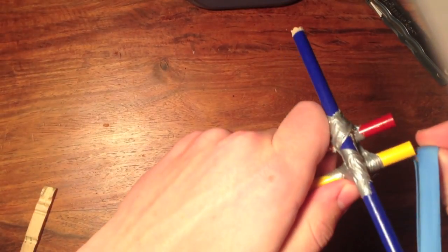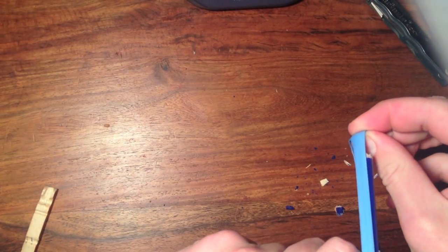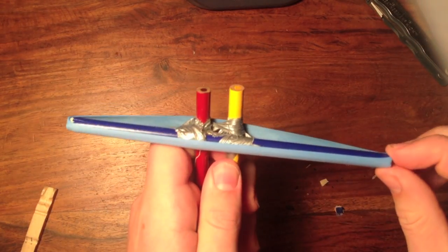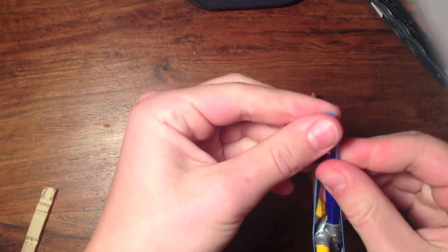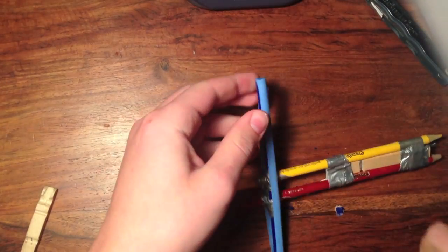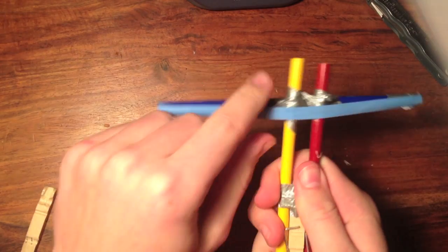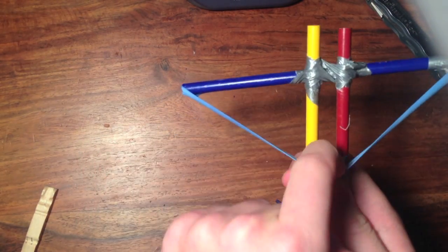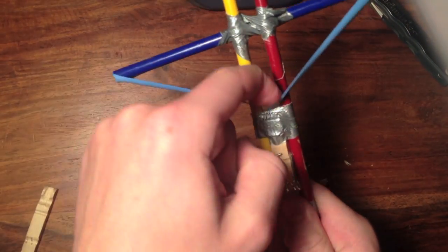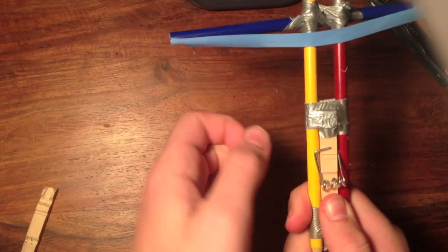Next, take your rubber band and stretch it across the two pencils, then tape down the bottom part like this. Adjust the tension of the rubber band - you don't want too much or else it will snap.